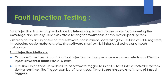In fault injection testing, there are two different methods. The first is compile-time injection, a fault injection technique where source code is modified to inject simulated faults into the system. The second is runtime injection, which makes use of a software trigger to inject a fault into the software system during runtime. The trigger can be two types: time-based triggers and interrupt-based triggers.